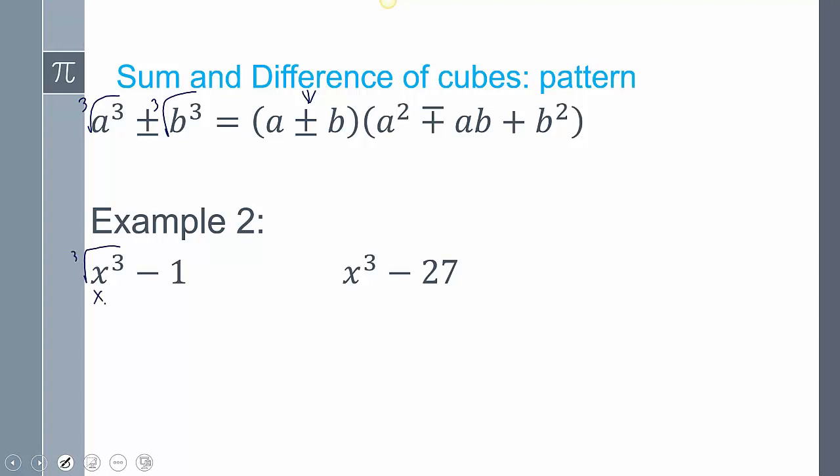So, in this case, cube root is x, cube root is 1. So, then it'll be, well, since that's a minus, you will use the bottom one. So, that's going to be x minus 1, x squared, and then plus, and then this is a times b. So, x times 1, which is just x. And then that's always plus, and then b squared. So, 1 squared is just 1.